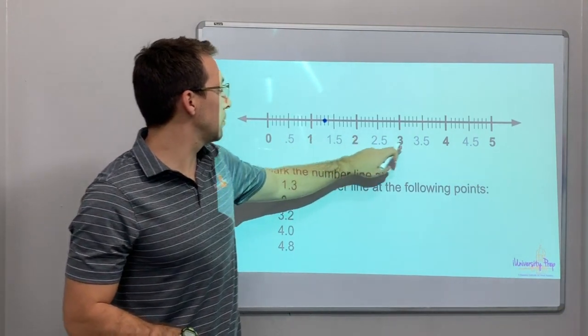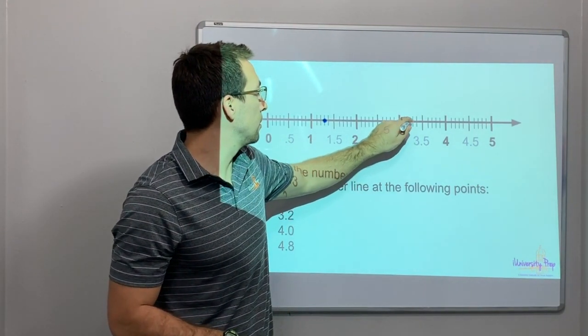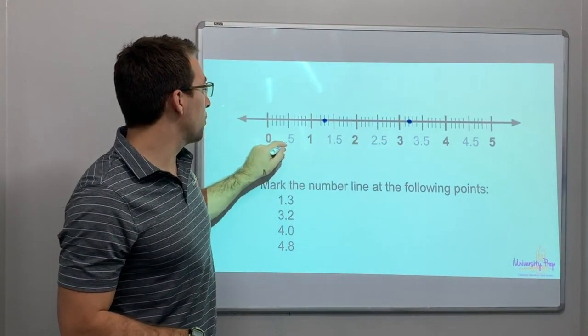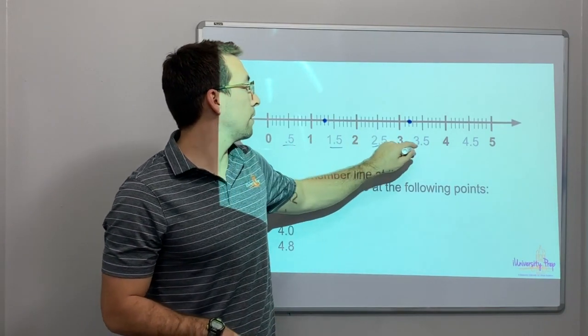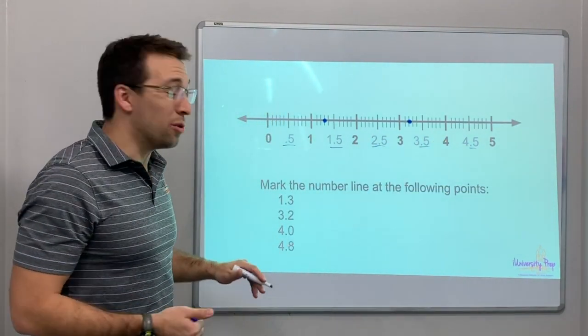3.2. 1, 2, 3, 2. And look, the 0.5, 1.5, 2.5, 3.5. It's all marked. It's pretty cool.